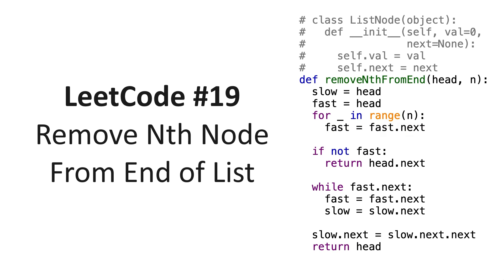In this video, we'll go over LeetCode question number 19, remove nth node from end of list. Given the head of a singly linked list, we need to remove the nth node from the end of the list and return its head.